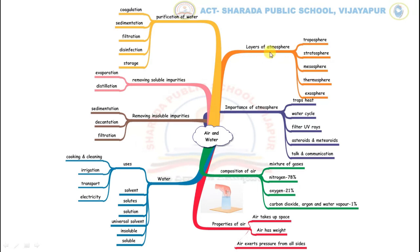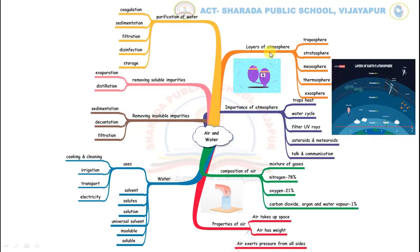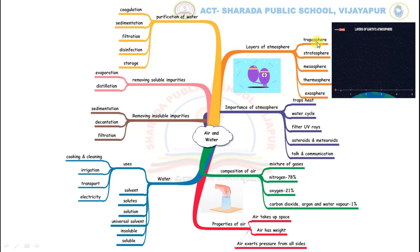Before that, we understand the term: what is atmosphere? The thick layer of air that surrounds the earth is known as atmosphere. The various layers of atmosphere are troposphere, stratosphere, mesosphere, thermosphere and exosphere.